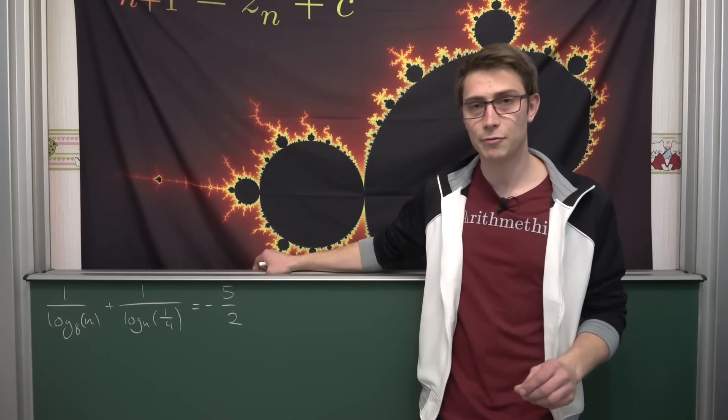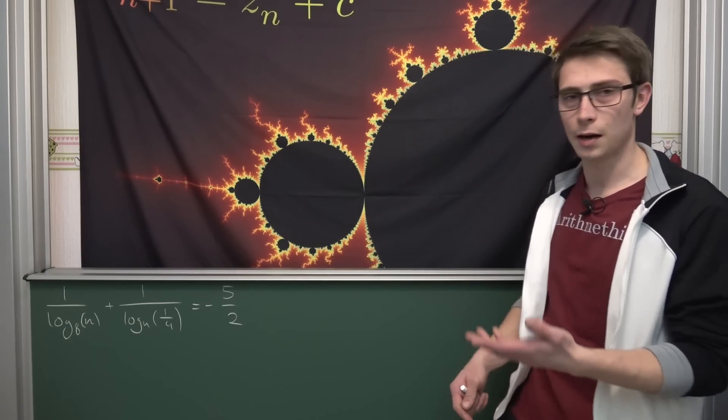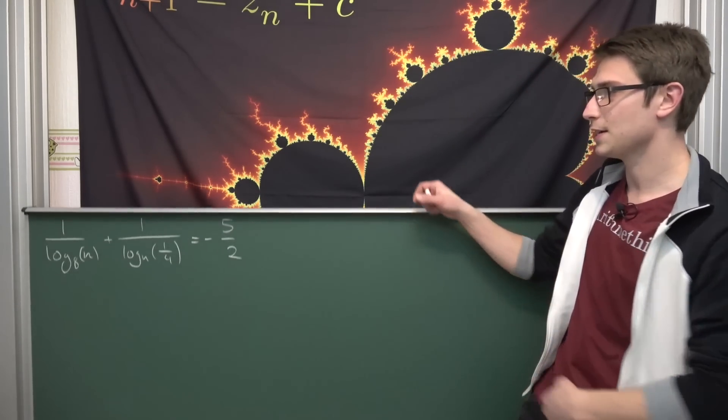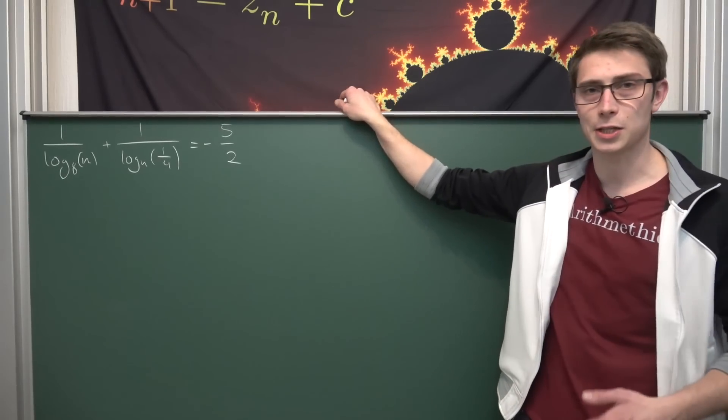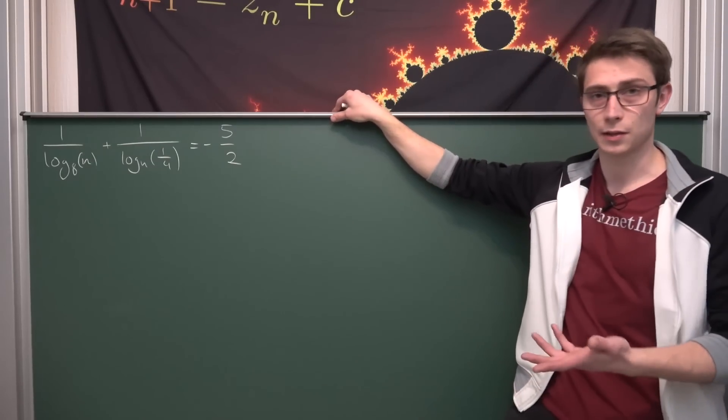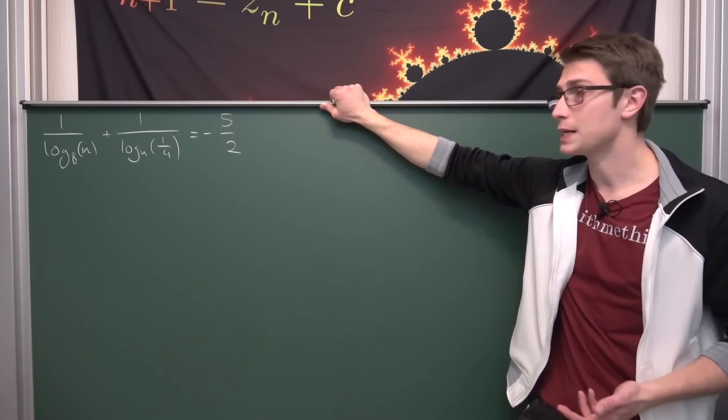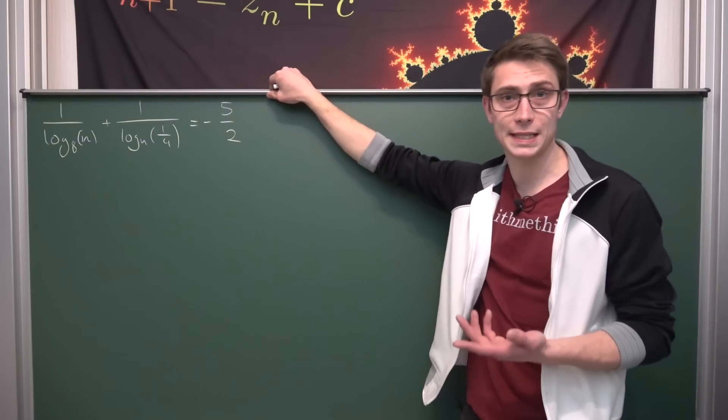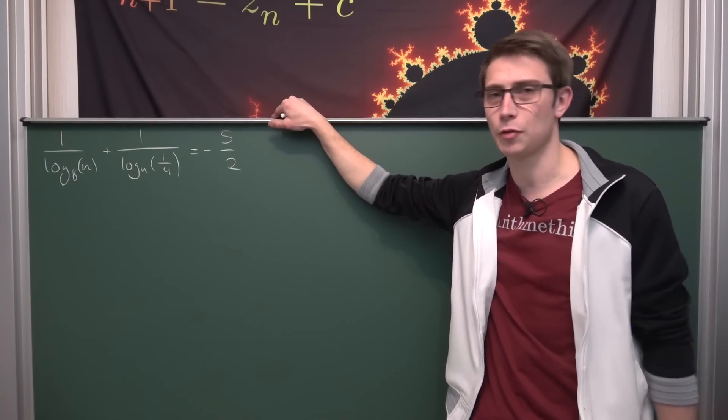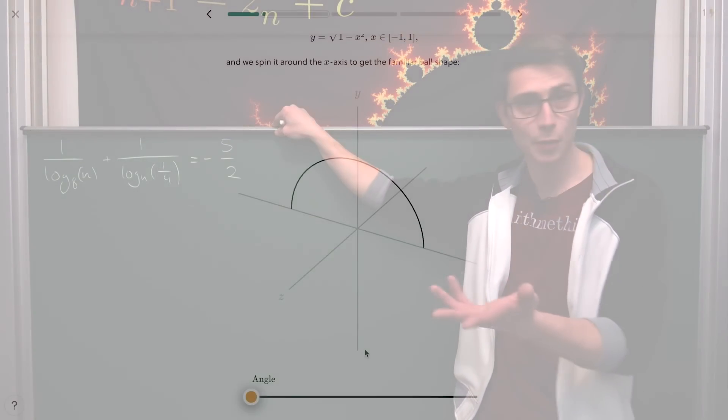It's from the Stanford Math Tournament of 2011, and this is what we want to cover today. OP was asking to find the integer solution. This equation right here is where we need to find integer solutions, where n is the solution. 1 over log base 8 of n plus 1 over log base n of 1 quarter is equal to negative 5 over 2. That's what we are going to do today. Try it out for yourself before watching the video and I hope you are going to enjoy what you are seeing today.